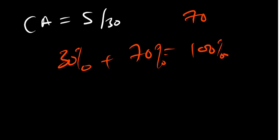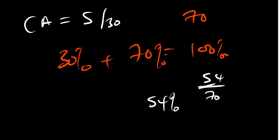Let's say in the final exam you have 54% — that is out of 100. Now we need to find what 54 is out of 70. So we do 54 divided by 100 times 70, because the percentage is always out of 100. So 54 divided by 100 times 70 gives us 37.8%.